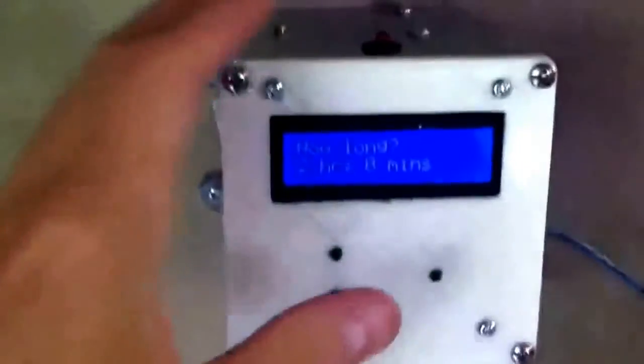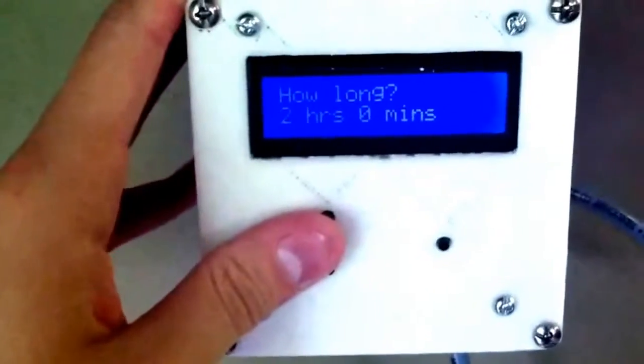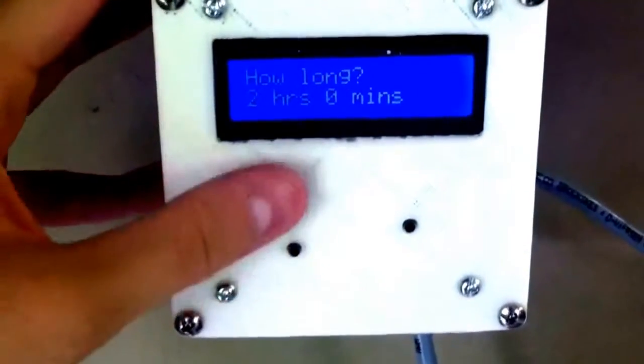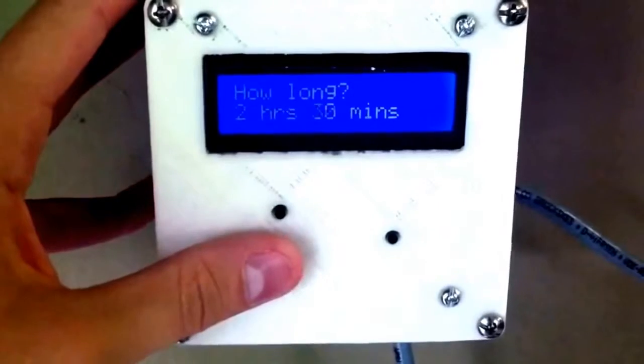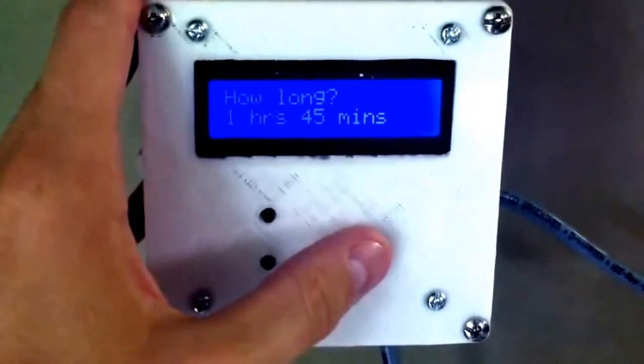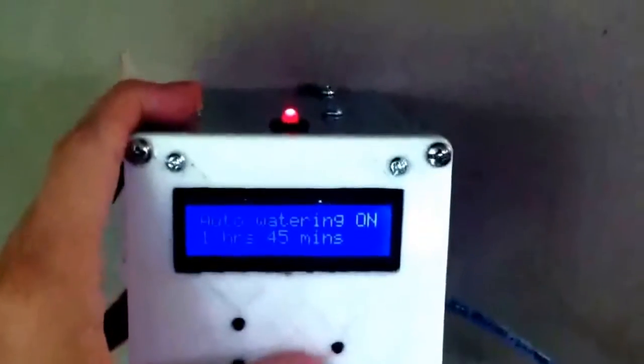There's no water running anymore. I also have this time mode. So you can see it defaults to two hours. Got up button, down button. Could increase the time. Decrease the time. This button is okay. Press this, it starts watering.